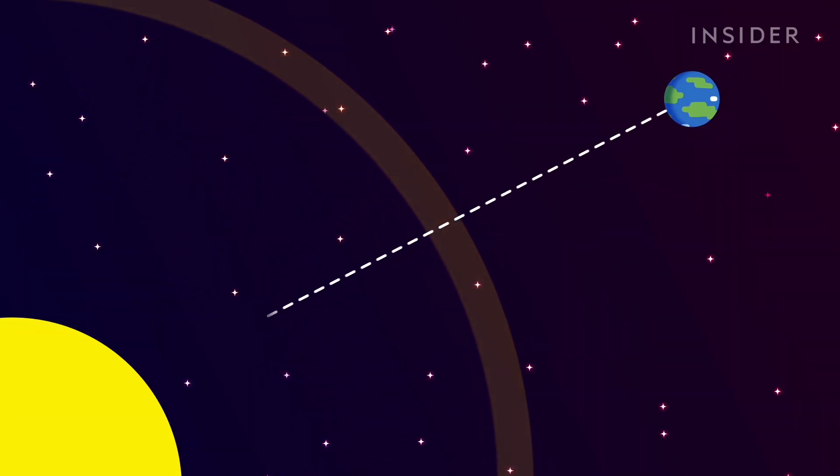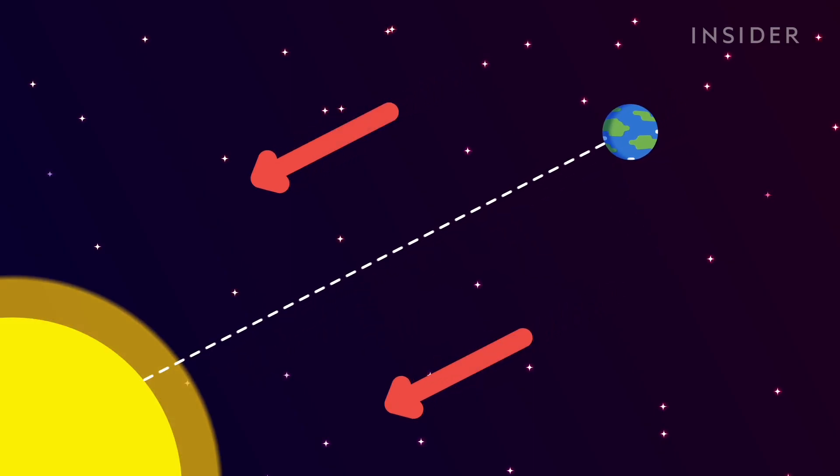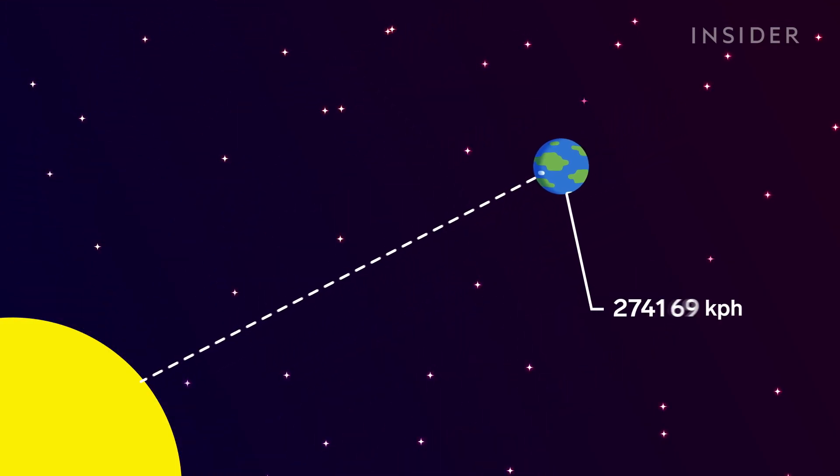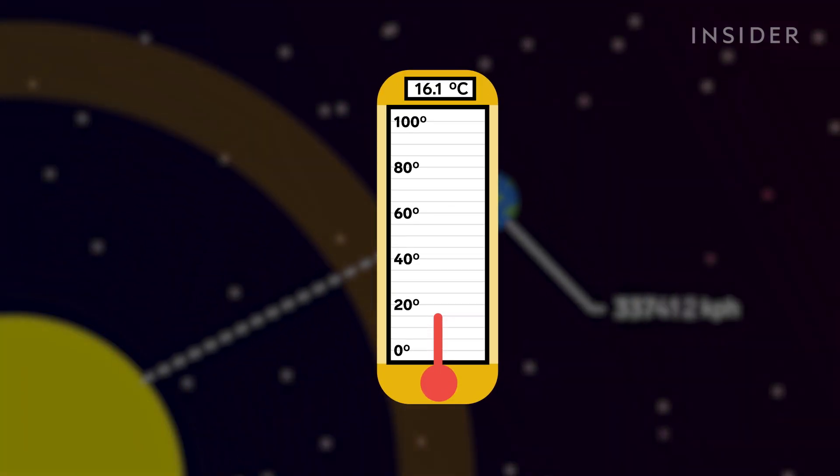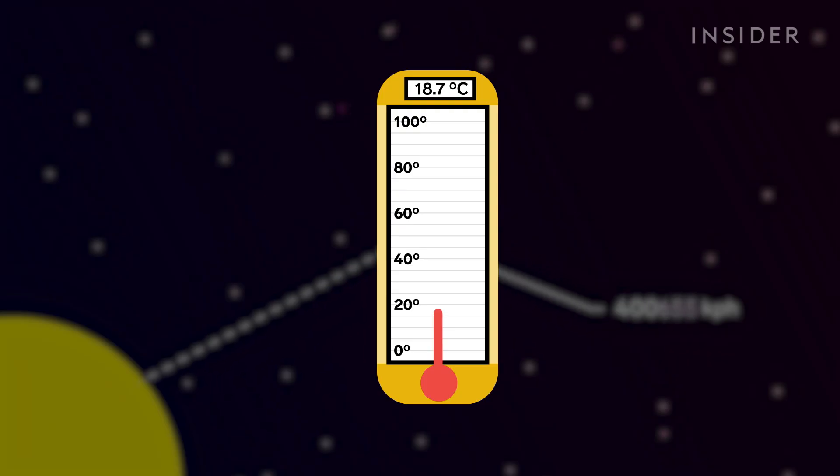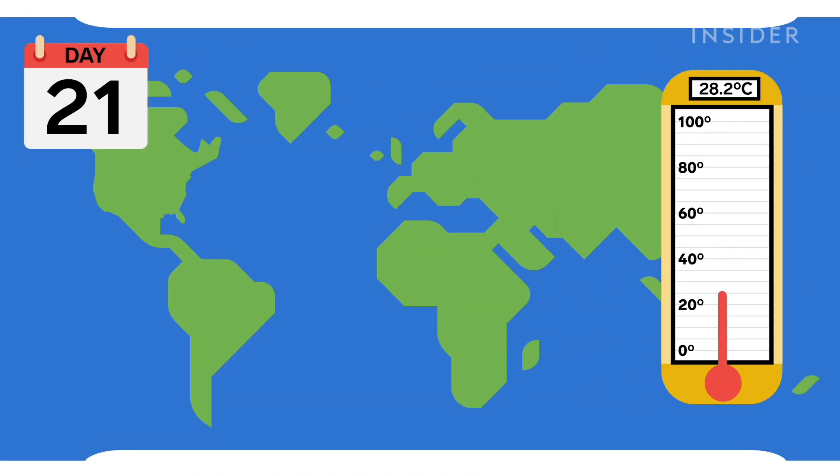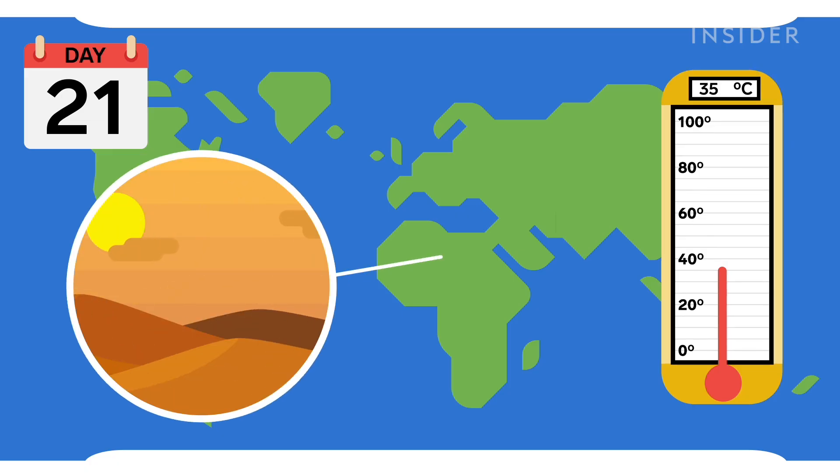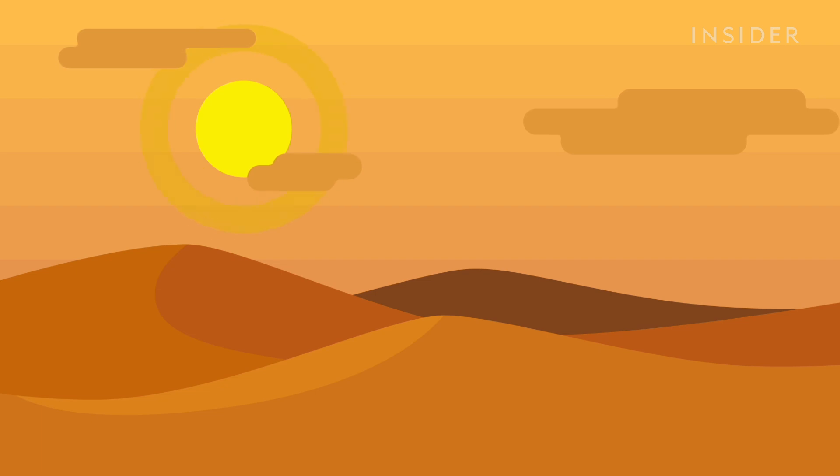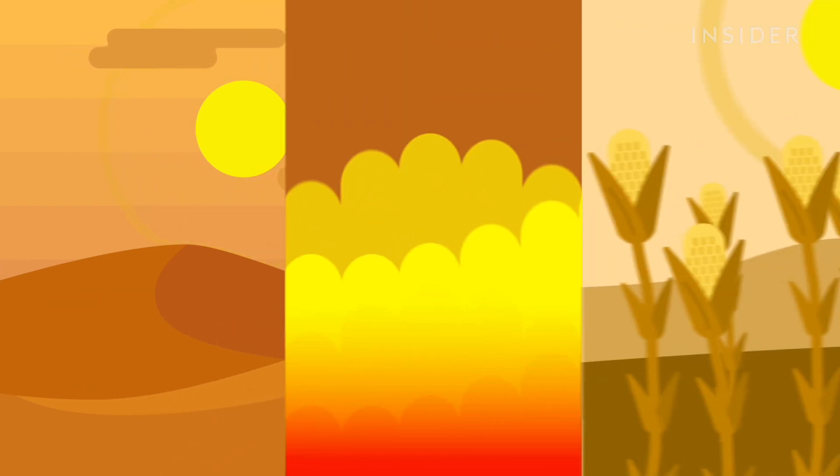But the closer we get, the stronger the sun's pull and the faster we go. This causes the temperature to rise exponentially. By day 21, global temperatures will have jumped to 35 degrees. That's hotter than an average day in the Sahara. And with desert heat comes desert droughts, sparking wildfires and killing crops.